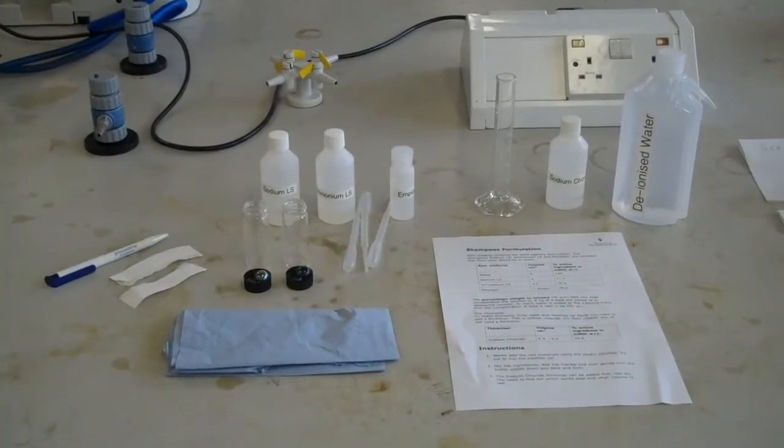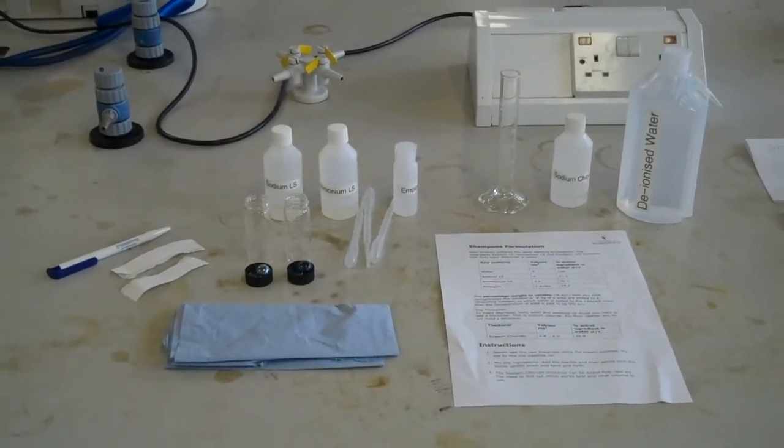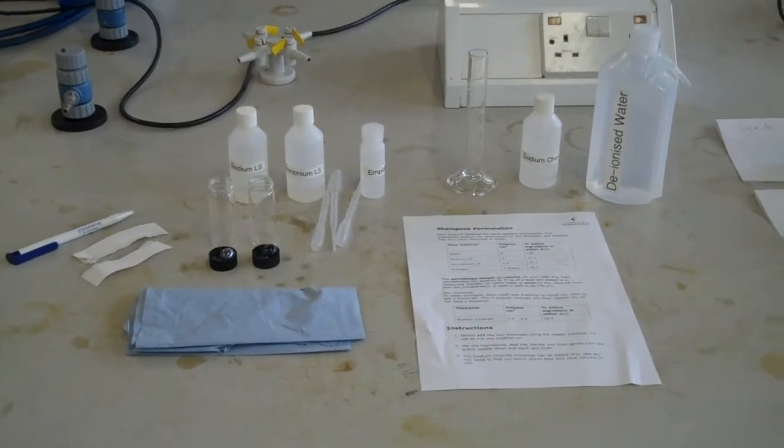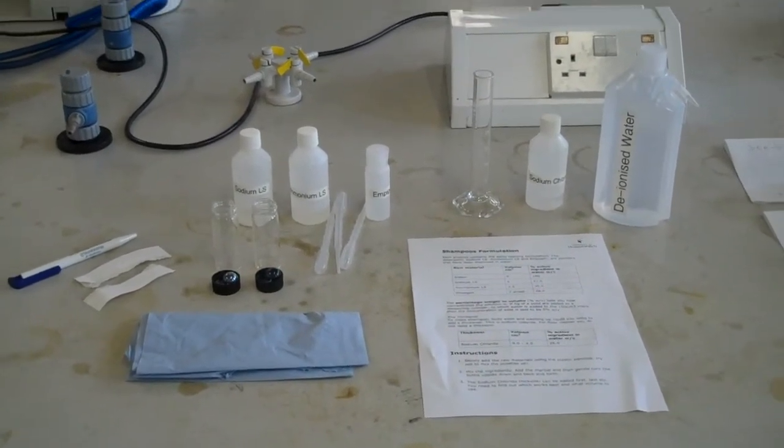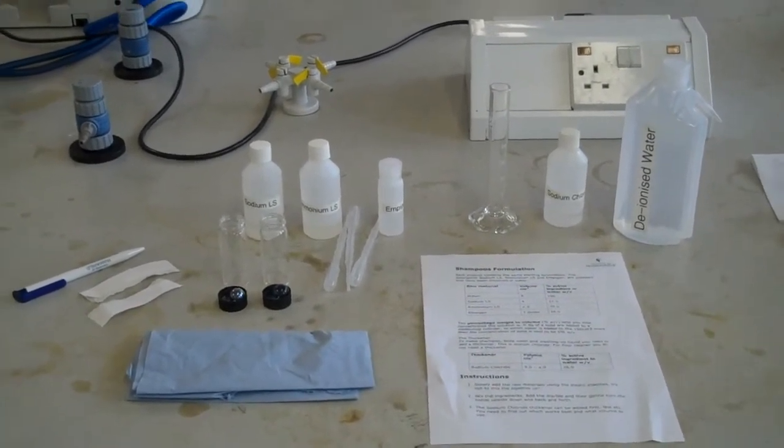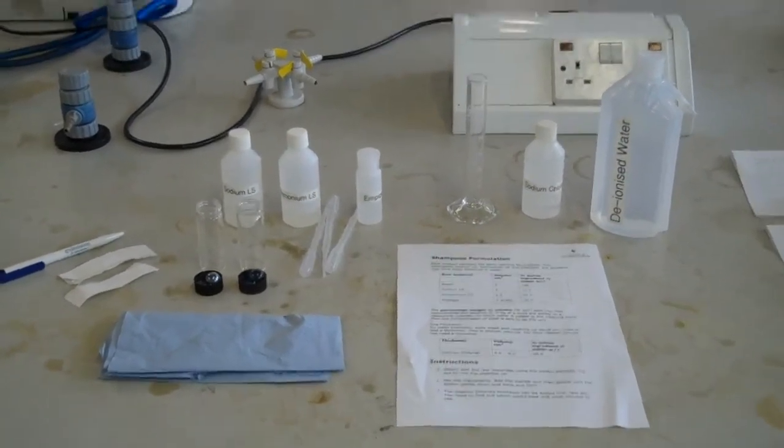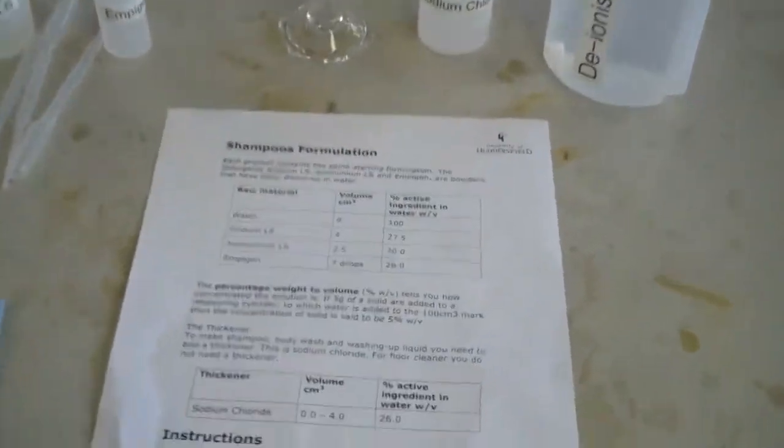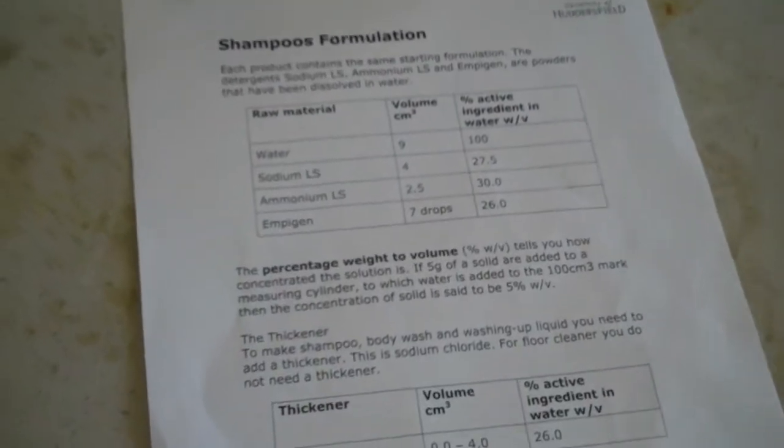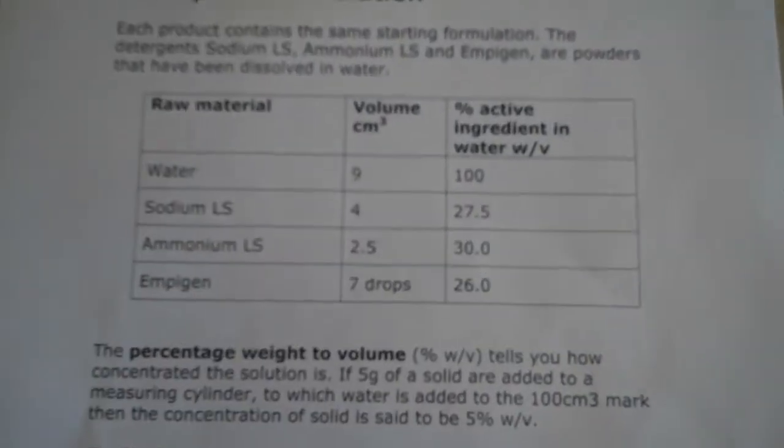This shows all you'll need to make a shampoo. On the far left, you've got a pen and some labels. You've got some sample bottles, and you've got the raw ingredients. So we'll go through each first, and you've got a sheet of paper telling you the instructions.